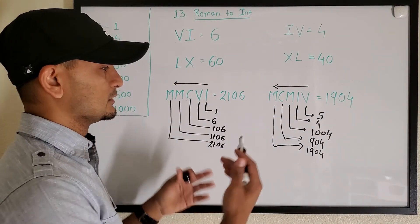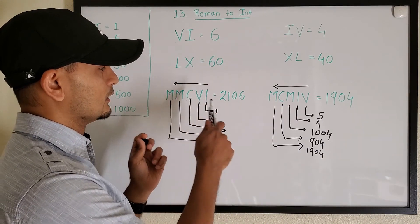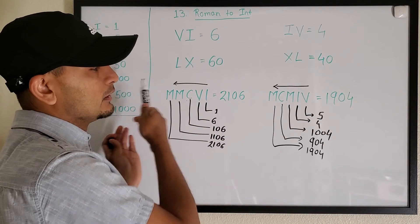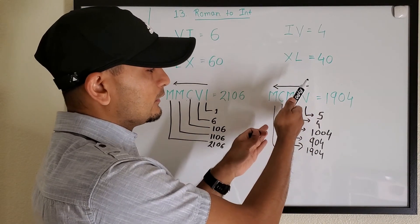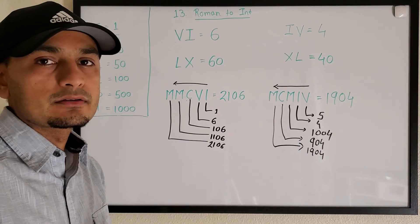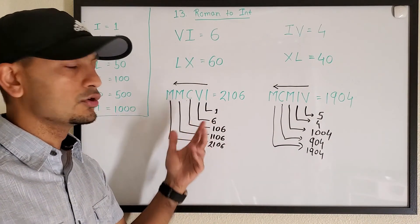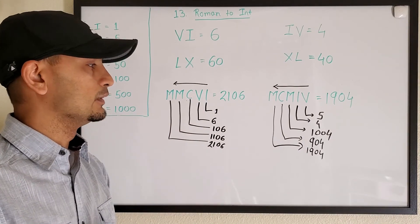So this is the simple algorithm: start looking the string in the reverse order and keep adding the numbers if the numbers are increasing. As soon as the number starts decreasing, subtract. So simple math - addition and subtraction - and we get our integer. So let's see the actual code and see how it runs.